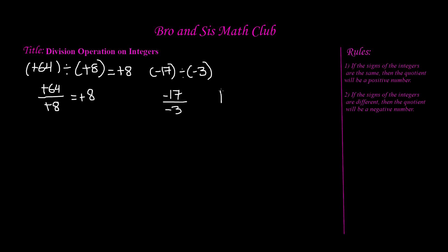Now if we divide, we know that 3 goes into 17 five times, because 3 times 5 is 15, and we are left with a remainder of 2. When we have a remainder, we rewrite this in mixed number form. Our quotient becomes our whole number, our remainder becomes the numerator, and our denominator is the divisor — which in this case is 3. So we have 5 and 2 thirds. But remember, the quotient will be a positive number, so negative 17 divided by negative 3 equals positive 5 and 2 thirds.